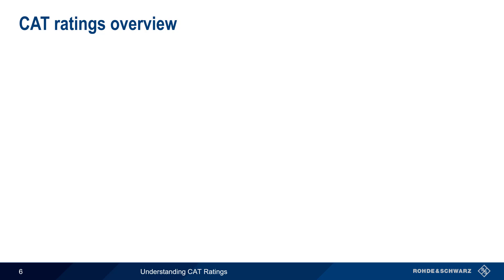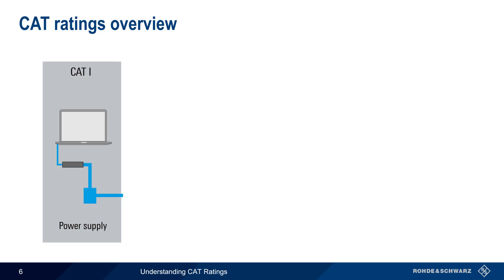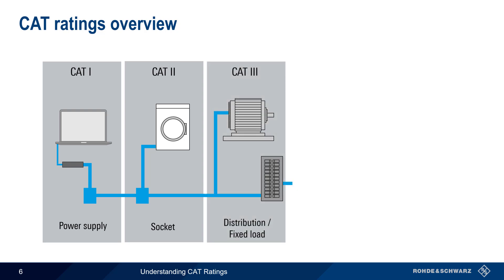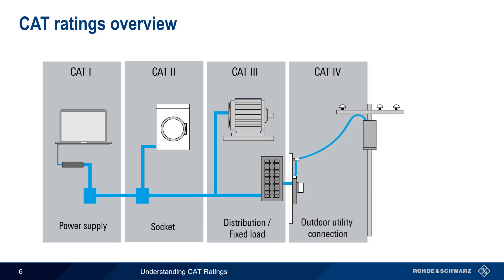There are four CAT ratings. CAT 1 applies to measurements of devices that are not directly connected to mains power. CAT 2 is needed when measuring devices that are plugged into standard sockets or receptacles. CAT 3 applies to both fixed loads that are directly wired into mains, as well as to power distribution elements such as breaker panels. And CAT 4 applies primarily to the outdoor utility connection. Note that the higher category numbers indicate closer proximity to the voltage source. In the next portion of this presentation, we will go through each of these categories in more detail.